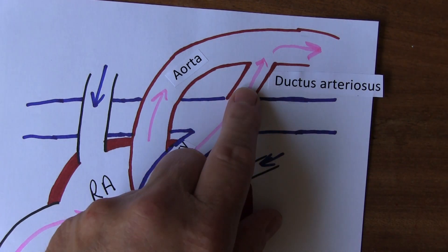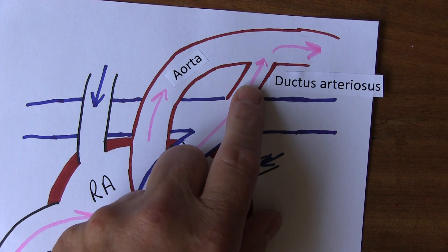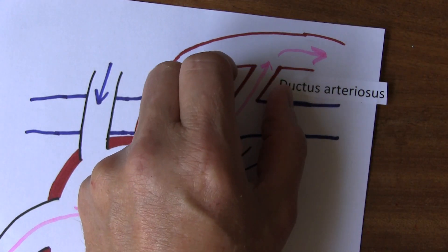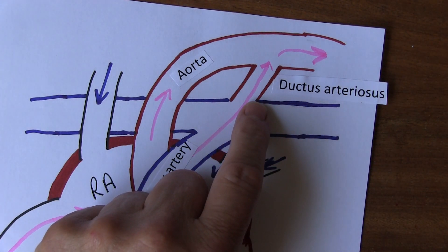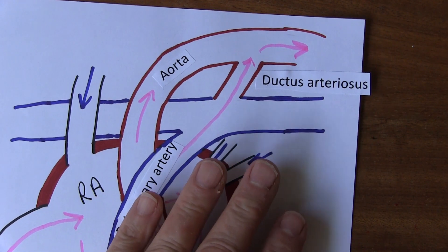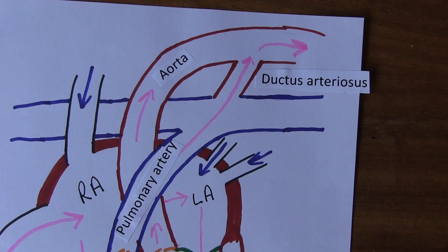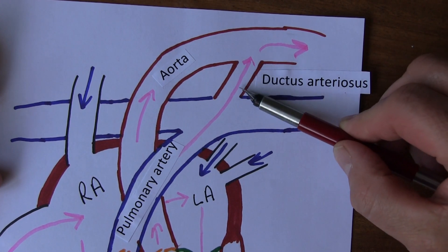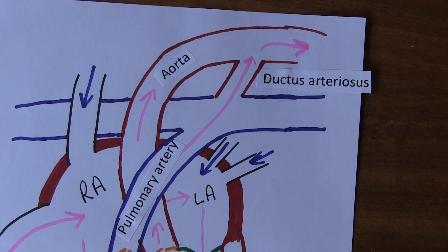There are two stages of closure described for the ductus arteriosus. The first stage occurs in the first 10 to 15 hours of life and is caused by this smooth muscle constriction — this vasoconstriction. The second stage closure occurs in the first two to three weeks of life and is mostly caused by proliferation of the intima — the inside layer of the ductus arteriosus proliferates and fills up the lumen, causing a more permanent closure.